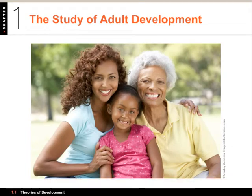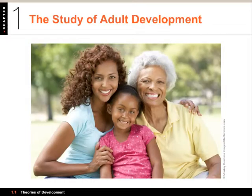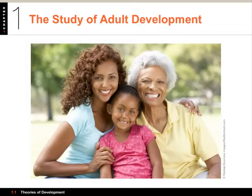Now let's talk a little bit about the study of adult development. During the 20th century, psychologists began to look at not just children but across the entire lifespan — biological, cognitive, social, and emotional changes from birth to death. The preliminary chapters we'll be looking at are primarily with infants and children, but there's tremendous research going on across the entire span of a person's life.